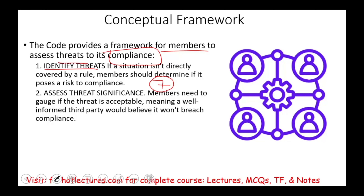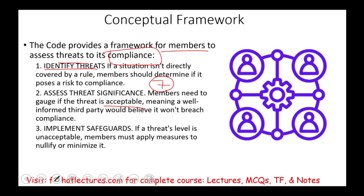Then you're going to have to assess the threats. The members need to gauge if the threat is acceptable, meaning a well-informed third party would believe it won't breach compliance. Simply put: how severe is that threat? Is it severe? Is it affecting you? Then you have to implement safeguards. If the threat level is unacceptable, members must apply measures to nullify or minimize it.